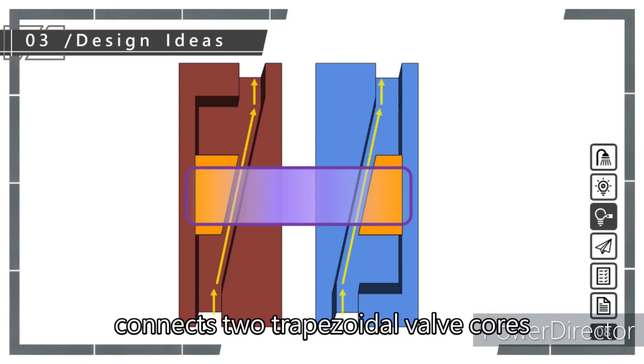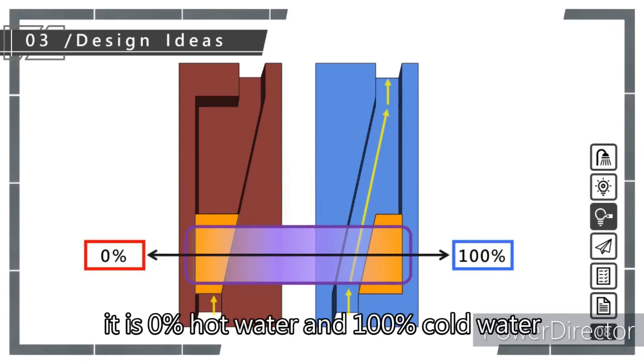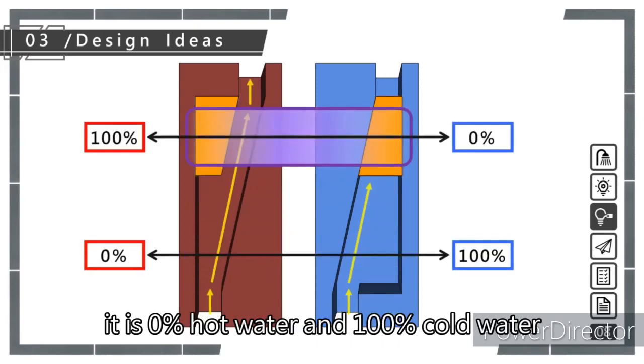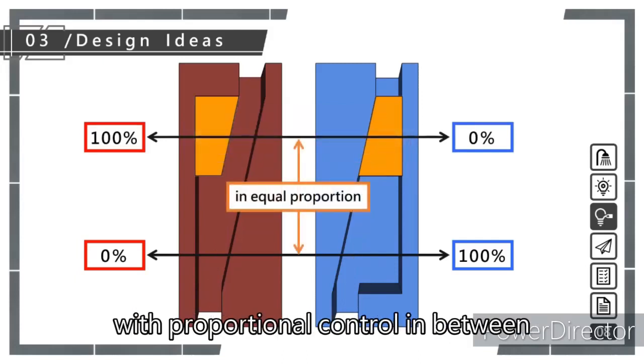A handle in the middle connects two trapezoidal valve cores. When the handle is at the bottom, it is 0% hot water and 100% cold water. At the top, it's the opposite, with proportional control in between.